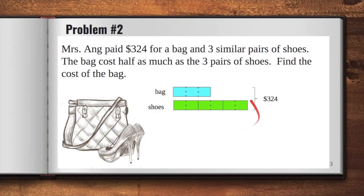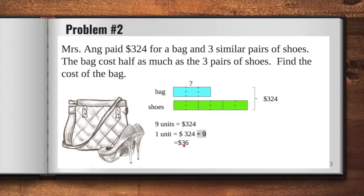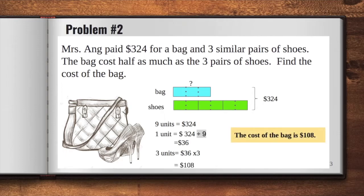It can be seen clearly that we have nine equal units here. So nine units equal to 324, and to get one unit, divide it by nine. So we have $36 for one unit. Remember, the bag here has three units. So we just have to multiply this amount by three. We will get $108. The final answer is, the cost of the bag is $108.